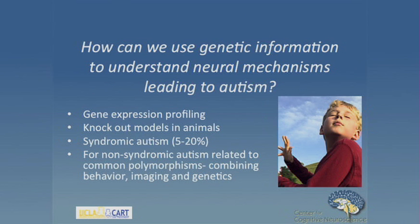The general question is: how can we use genetic information to help us understand the neural mechanisms which lead to autism, and in particular to the complex behaviors that we see? You can do gene expression profiling, knockout models in animals, or look at syndromic autisms like Fragile X. If you want to look at humans for the vast majority of non-syndromic individuals with autism, then you have to go into the realm of common polymorphisms, and we've been using this approach to combine behavior, imaging, and genetics.